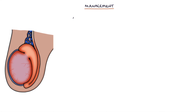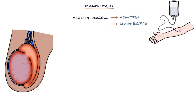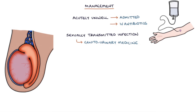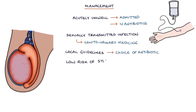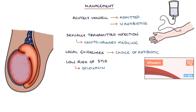Let's talk about management. Acutely very unwell patients or septic patients need to be admitted to hospital for treatment, which will involve IV antibiotics. Patients with a high risk of sexually transmitted infection should be urgently referred to the Genitourinary Medicine or GUM service for assessment and treatment. Local guidelines will guide your choice of antibiotic. For patients that are at low risk of STIs, a typical choice is ofloxacin, which is usually first line, and this is used for 14 days.